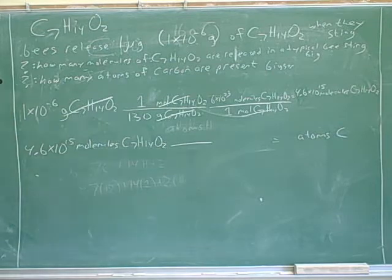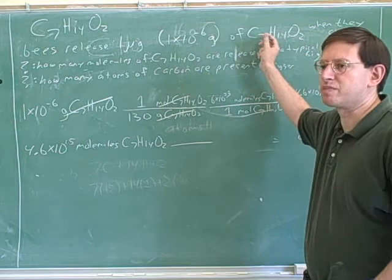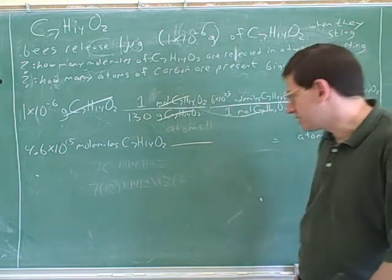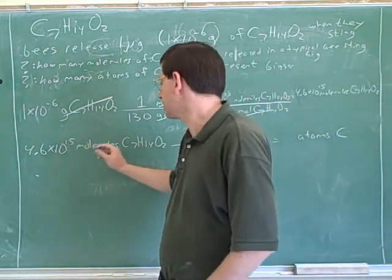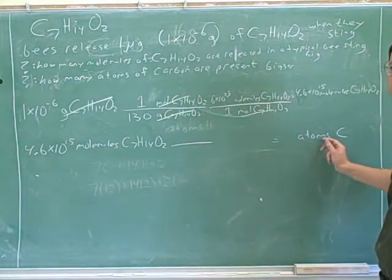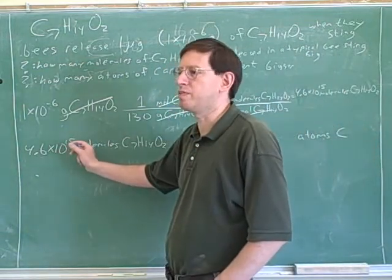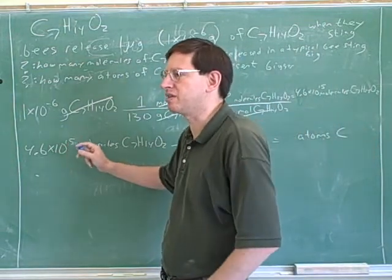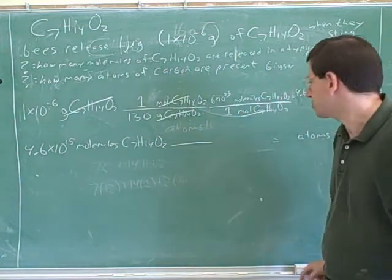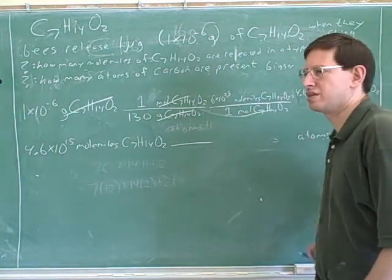Well, one thing we know about these things is that they have 10 to the negative 6 grams of this molecule. Something else that we've figured out is that these things have this many of these molecules. And then we should be able to convert that to figure out how many atoms of carbon are in there. So this is what I meant when I asked what are the starting units. These would be good units for us to start with for these things to do our conversion. Okay, so now we have to try to put in some conversion ratios to go from here to here.